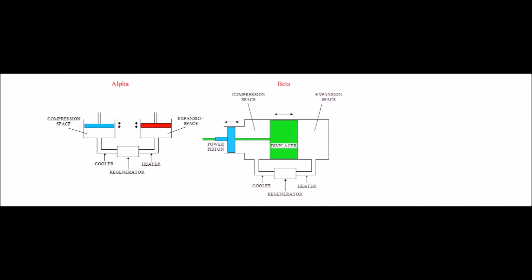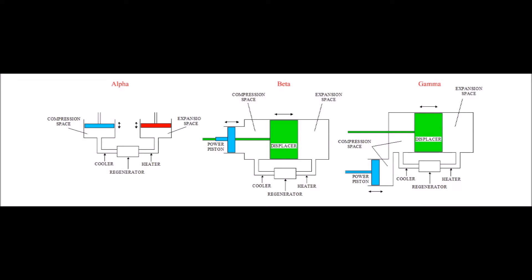When we look into all the three Stirling engines—alpha, beta, and gamma—each has its own body structure.